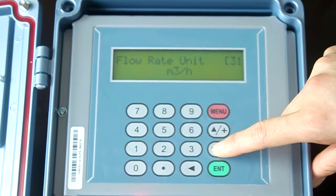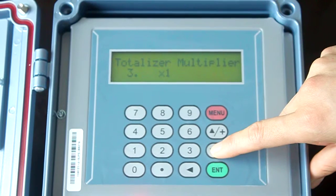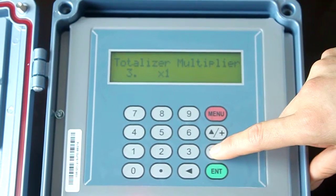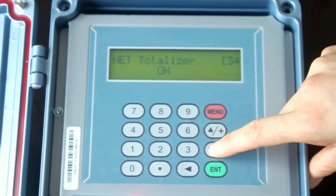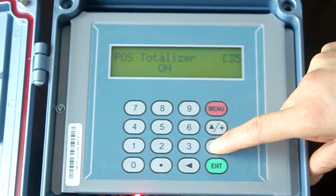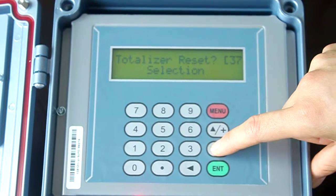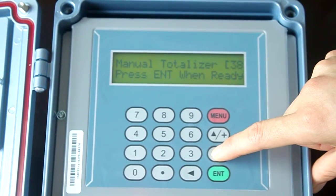Measurement units. Flow rate unit. Totalizer units. Totalizer multiplier. Light totalizer. Hard tip totalizer. Negative totalizer. Totalizer reset. Manual totalizer.